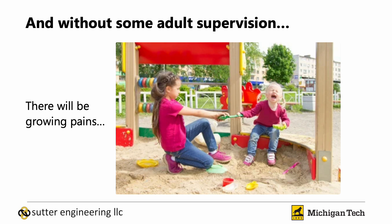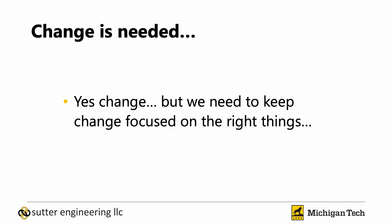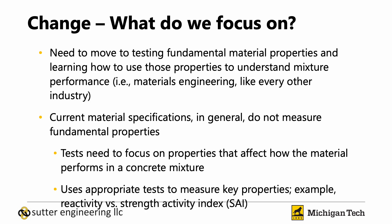If we don't have specifications and standards to guide us, there are going to be some growing pains that we must try to avoid. We need new specifications and changes in specifications. As we make this change, we need to do what every other industry does — learn how to engineer our materials. This requires measuring fundamental properties known to impact performance in concrete. Current material specifications generally do not measure these fundamental properties, so we need new tests and to use tests we've already developed.